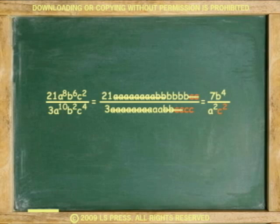The final answer is 7b to the 4th over a squared c squared. As you can see, subtracting is faster.